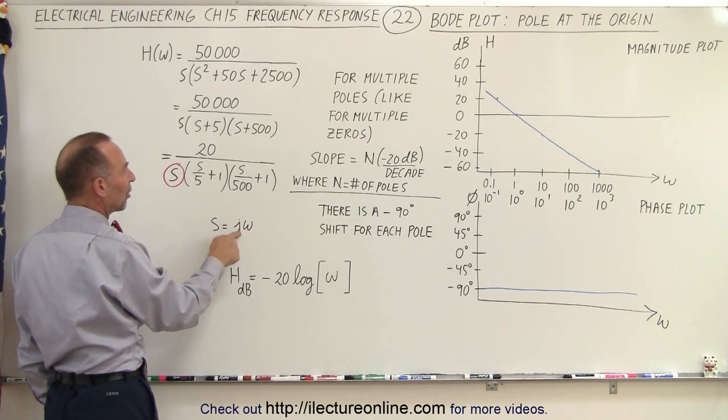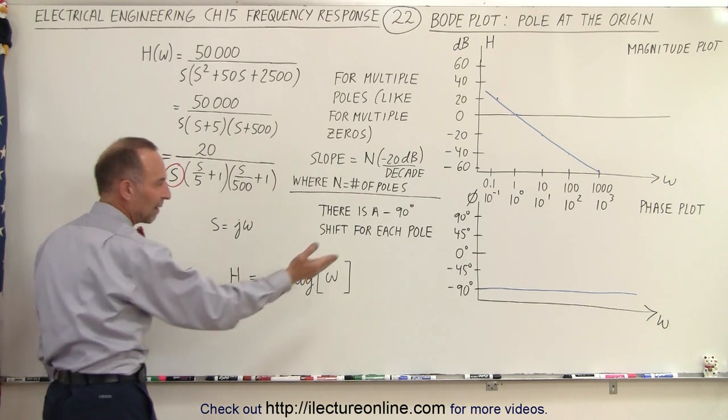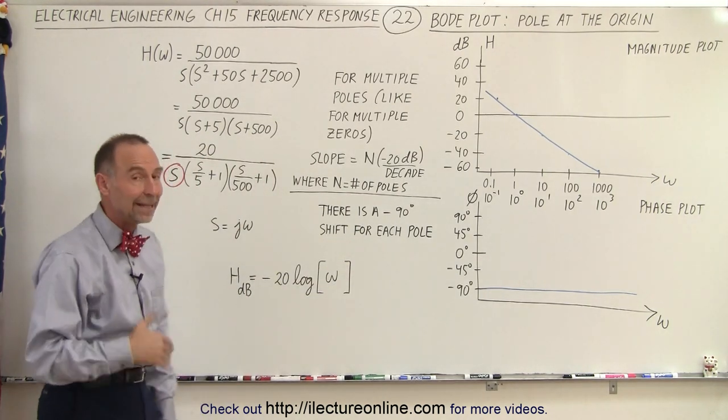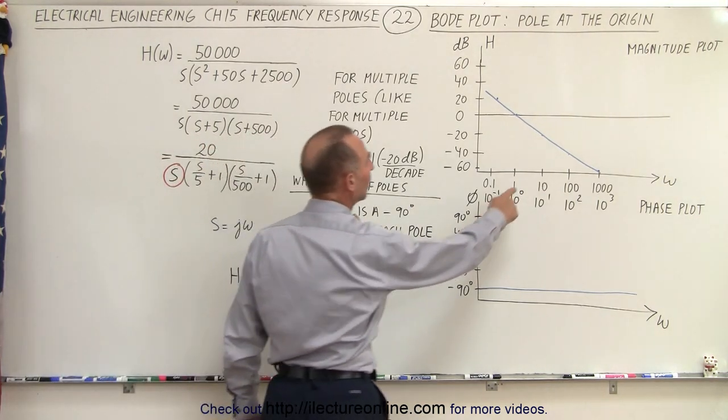Remember that S equals j omega, but being in the denominator, the j becomes negative. So we have a negative 90 degrees phase angle, and the slope would therefore also be negative 20 times the log of omega.